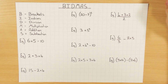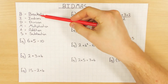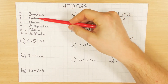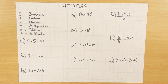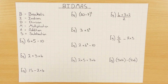So what is BIDMAS? BIDMAS is the order of calculation. We always do brackets first, then indices, division, multiplication, addition and subtraction. Whenever you've got a big sum of different things going on you need to remember BIDMAS, because if you just move from reading left to right you will get the answer wrong, which is very common in exams.